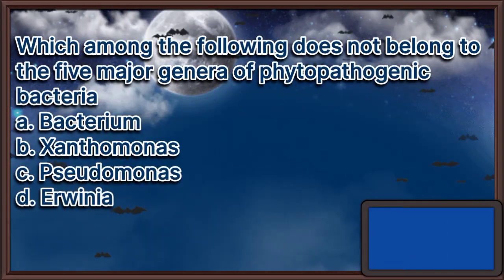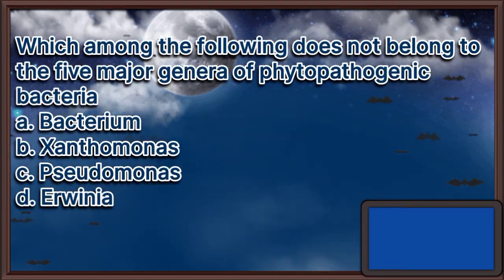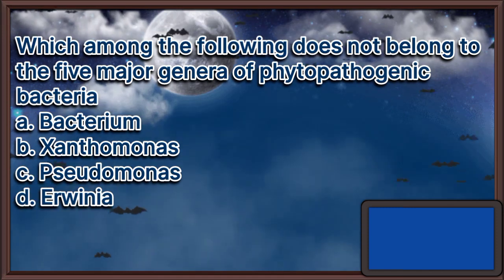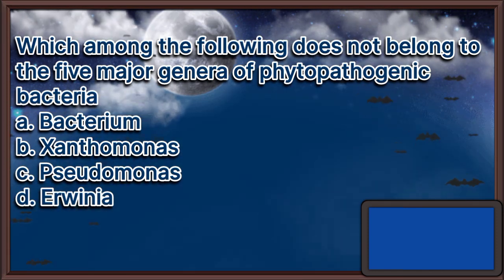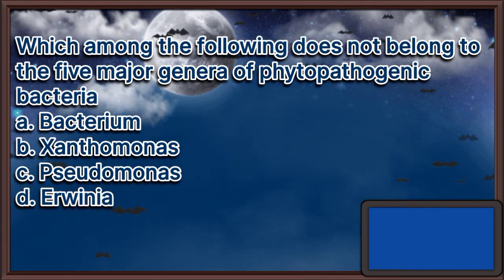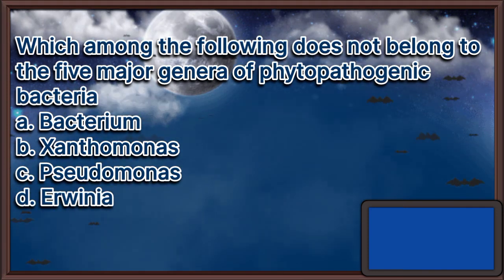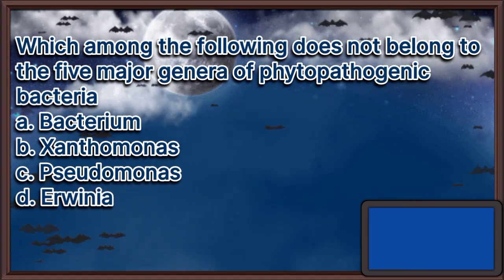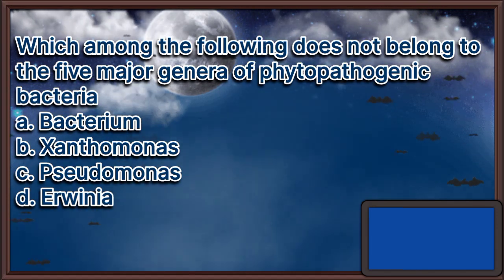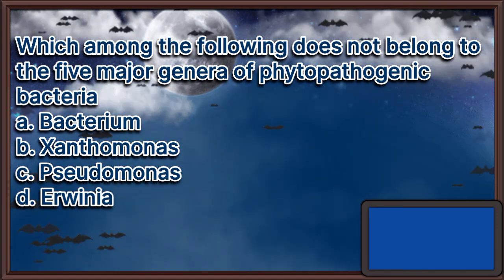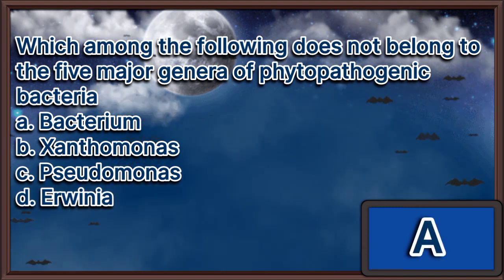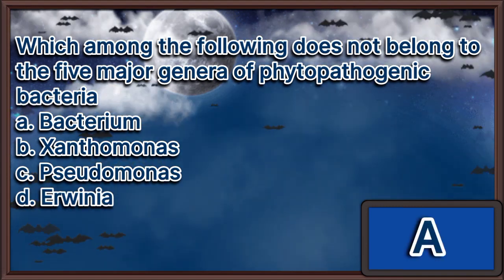Which among the following does not belong to the five major genera of phytopathogenic bacteria? A. Bacterium. B. Xanthomonas. C. Pseudomonas. D. Erwinia. The answer is letter A.